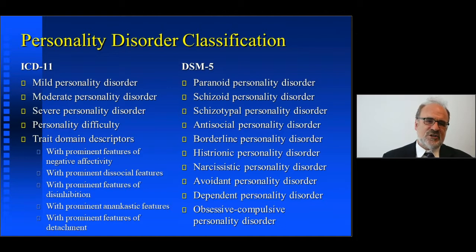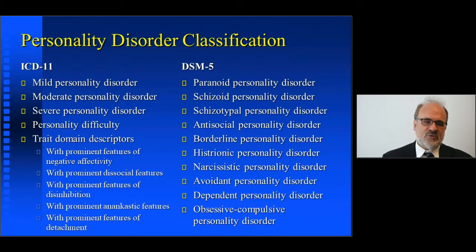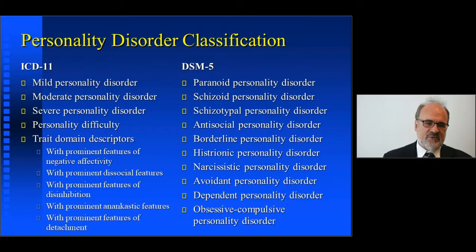ICD-11, in addition to these three levels of severity, has trait domains. This is the dimensional approach, which is a simplified version of what the DSM-5 work group had originally proposed. There are five trait domains. You give the level of severity — like mild or moderate personality disorder — and then indicate which of the five are present or absent. The five are: prominent features of negative affectivity, prominent dissocial features, prominent features of disinhibition, prominent anankastic features, and prominent features of detachment.